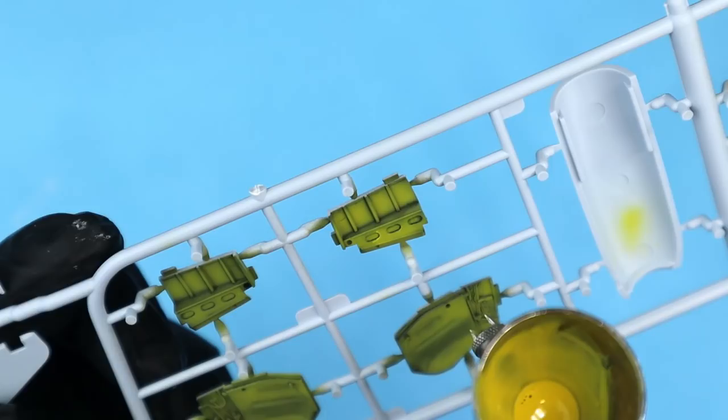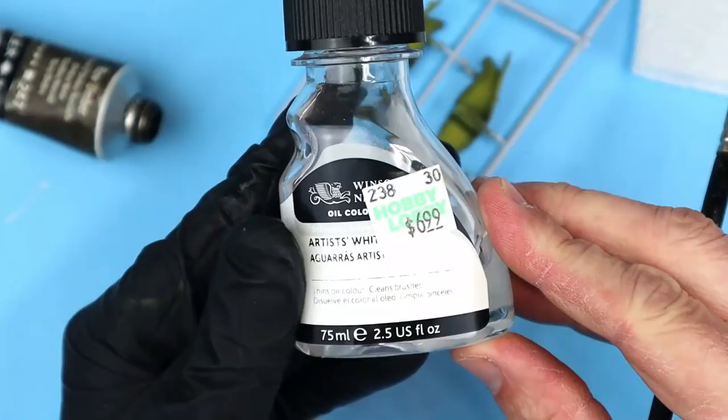To create even more contrast in those areas I came back in with a really thin coat of Tamiya flat yellow and sprayed it in the center areas of each of those pieces.